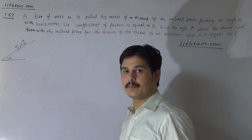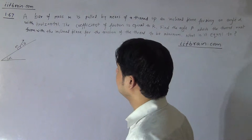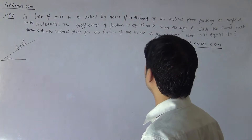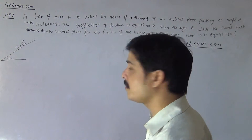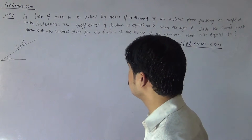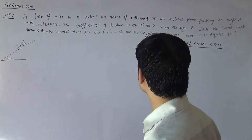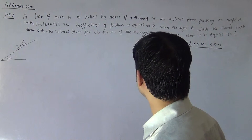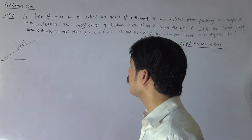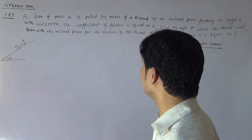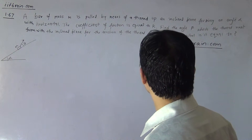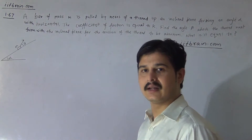This is problem 1.67: a bar of mass m is pulled by means of a thread up an inclined plane forming an angle alpha with the horizontal. The coefficient of friction is equal to k. Find the angle beta which the thread must form with the inclined plane for the tension of the thread to be minimum, and what is that tension?